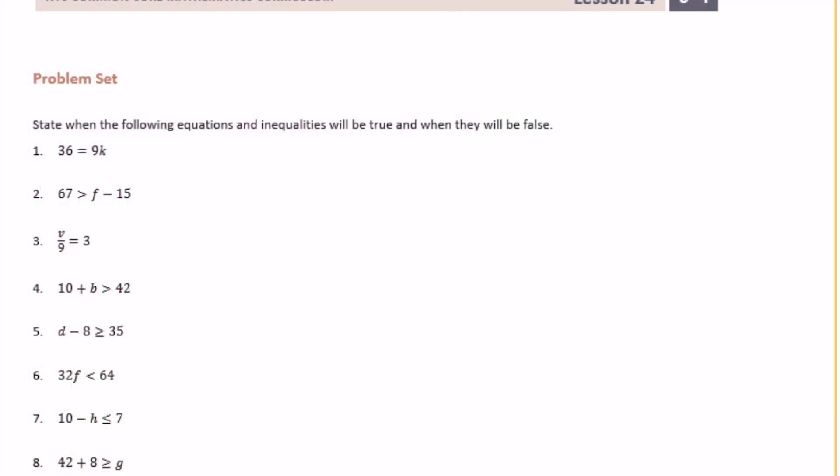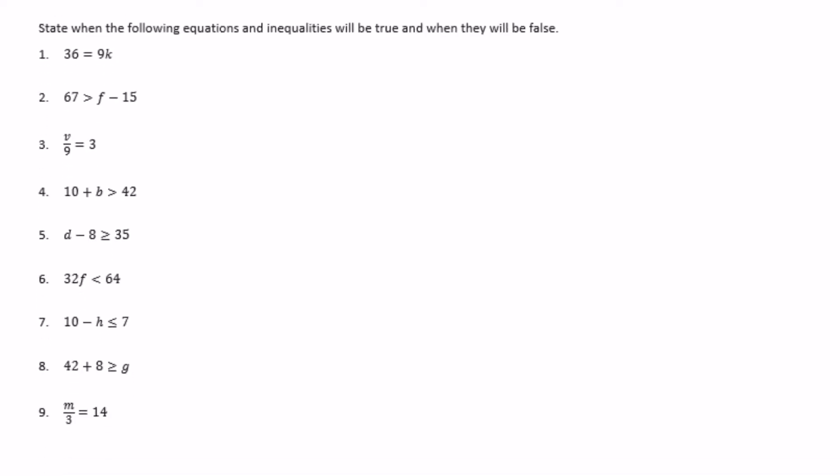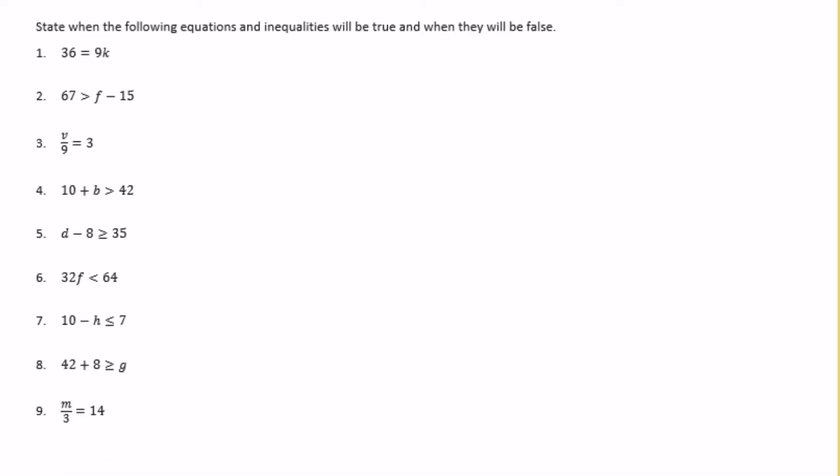Sixth grade Module 4, Lesson 24 problem set. State when the following equations and inequalities will be true and when they will be false. Number one: we need to say when 36 is going to be equal to 9k, or 9 times k.